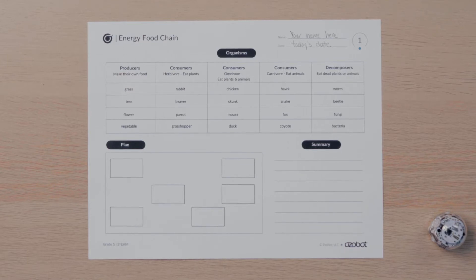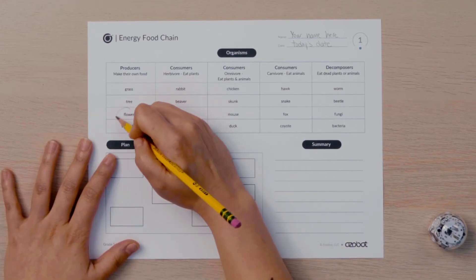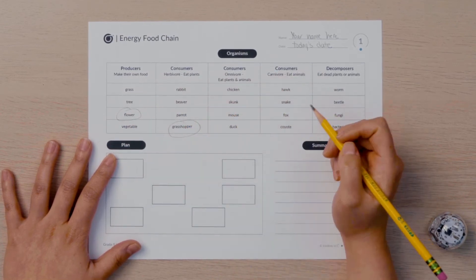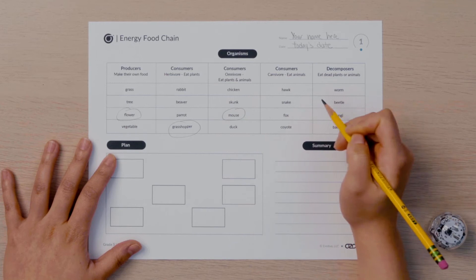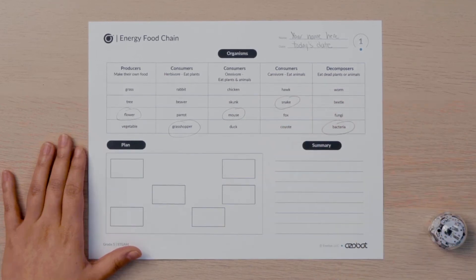Your food chain will begin with a producer. Once you choose a producer, think of a consumer that would eat it. Your food chain will continue with consumers based on the food they eat. Finally, you will end your food chain with a decomposer. I am going to circle the organisms I will use in my food chain. I will use a flower, a grasshopper, a mouse, a snake, and bacteria. What organisms are you going to show a food chain with?